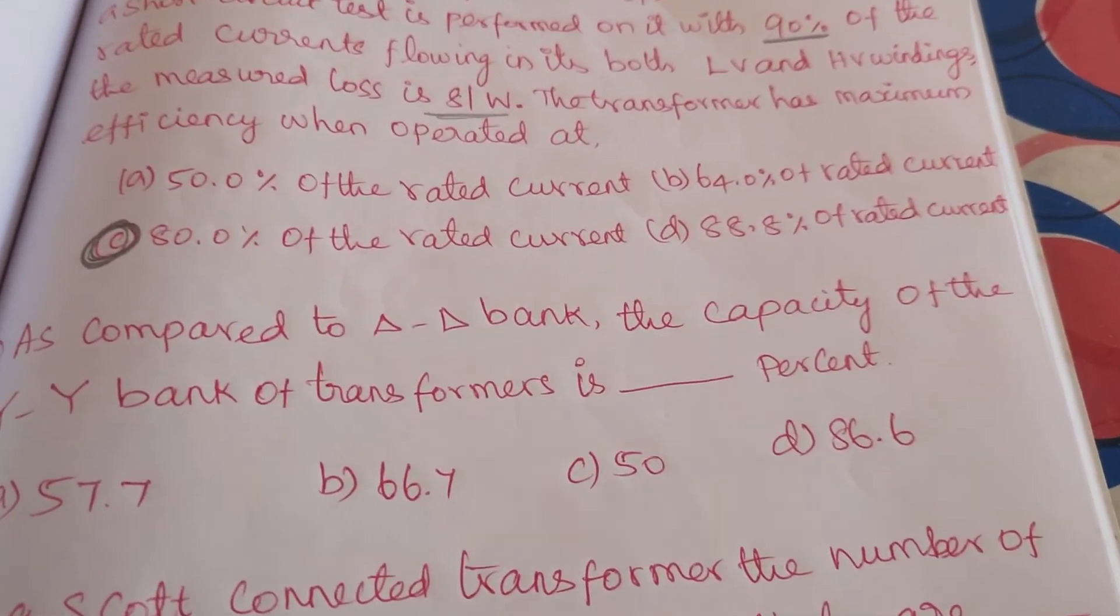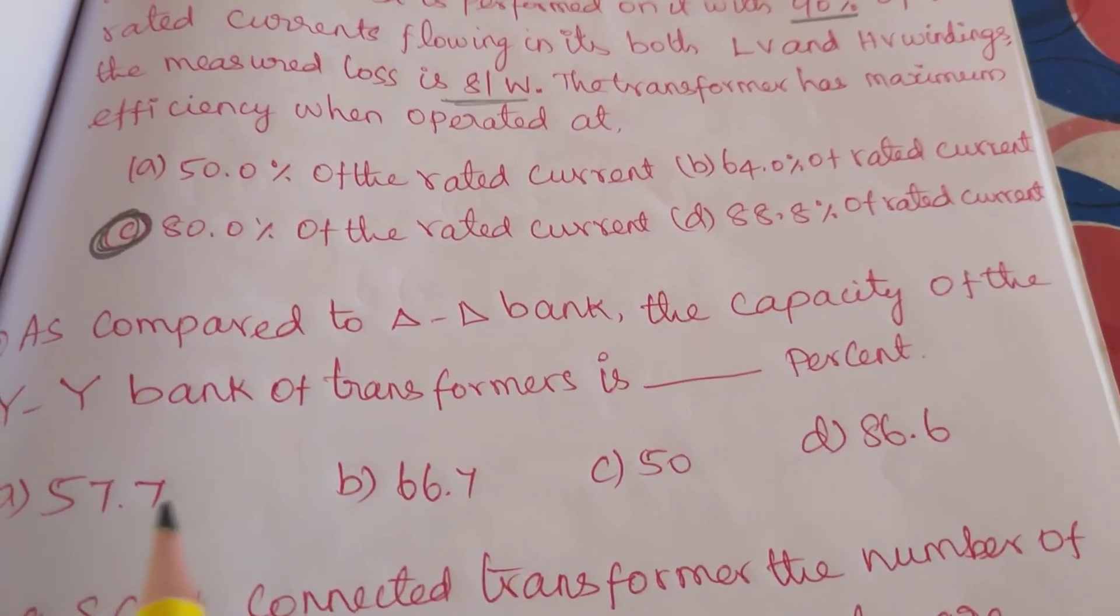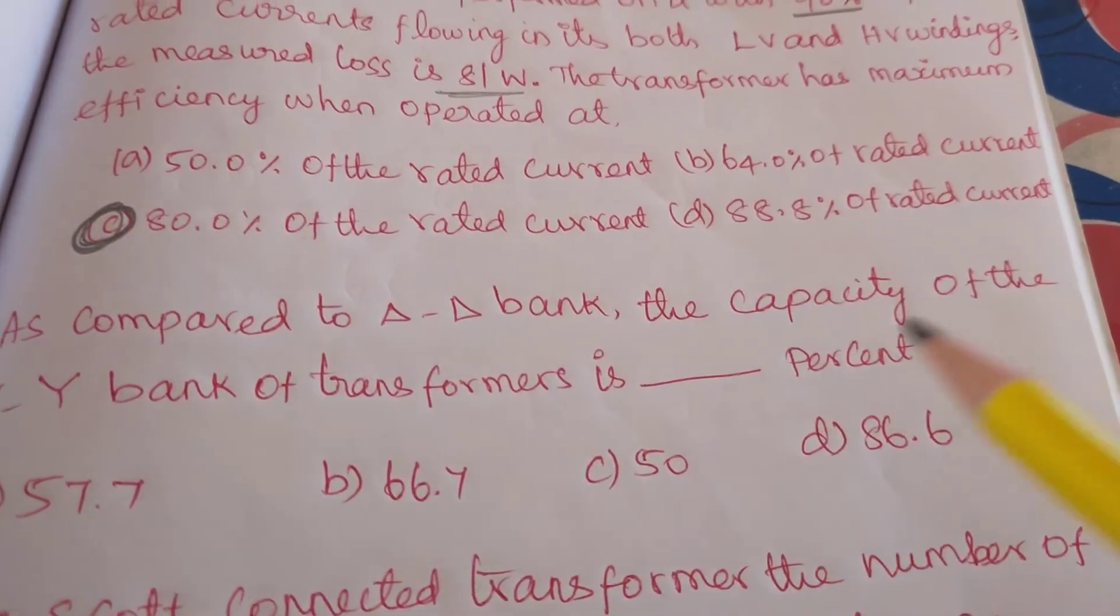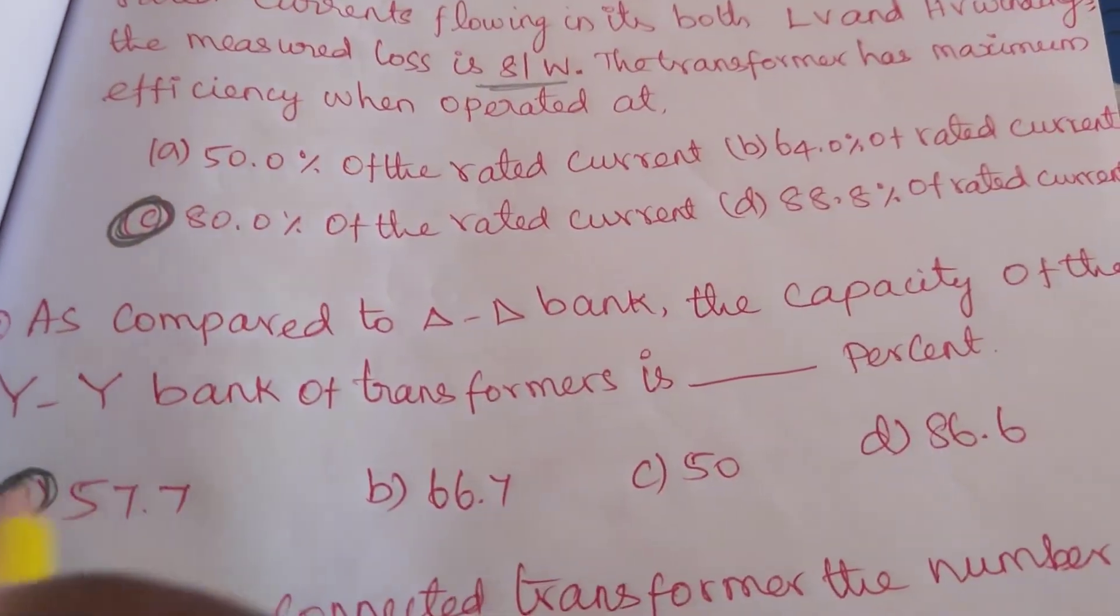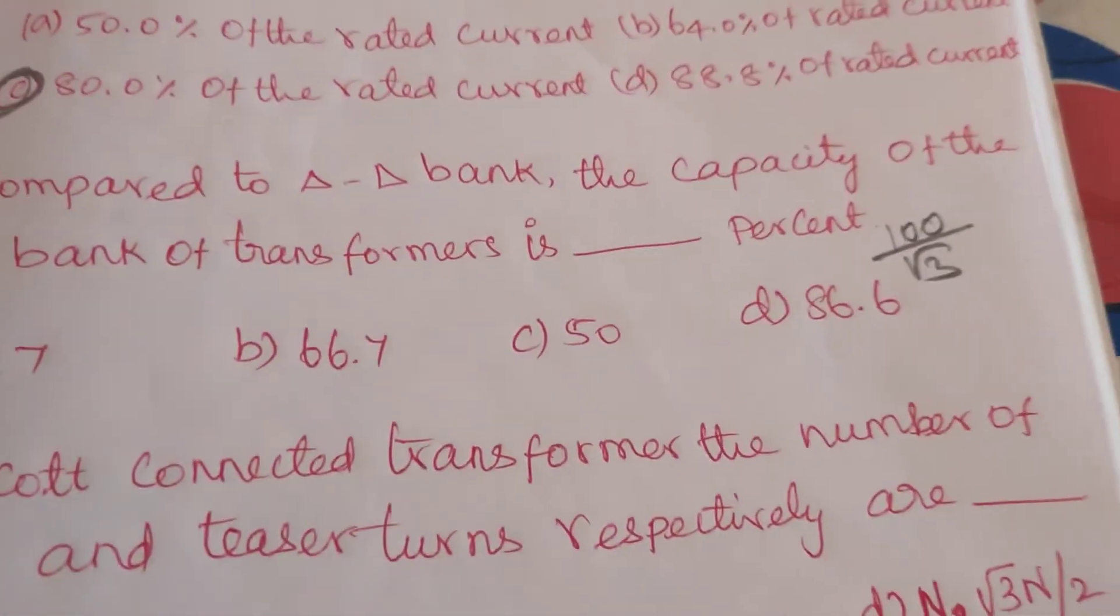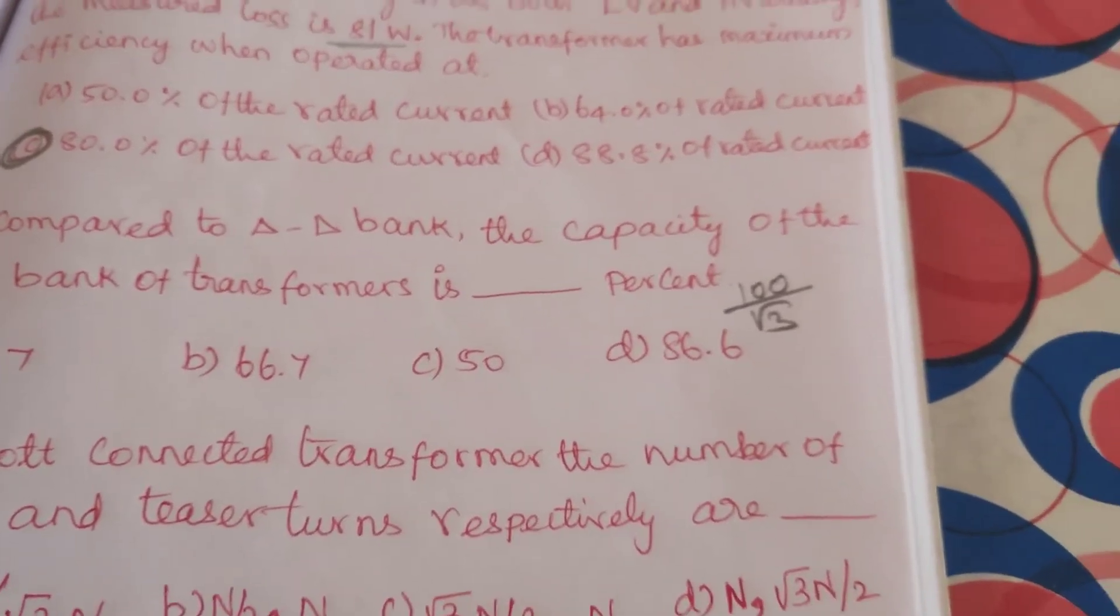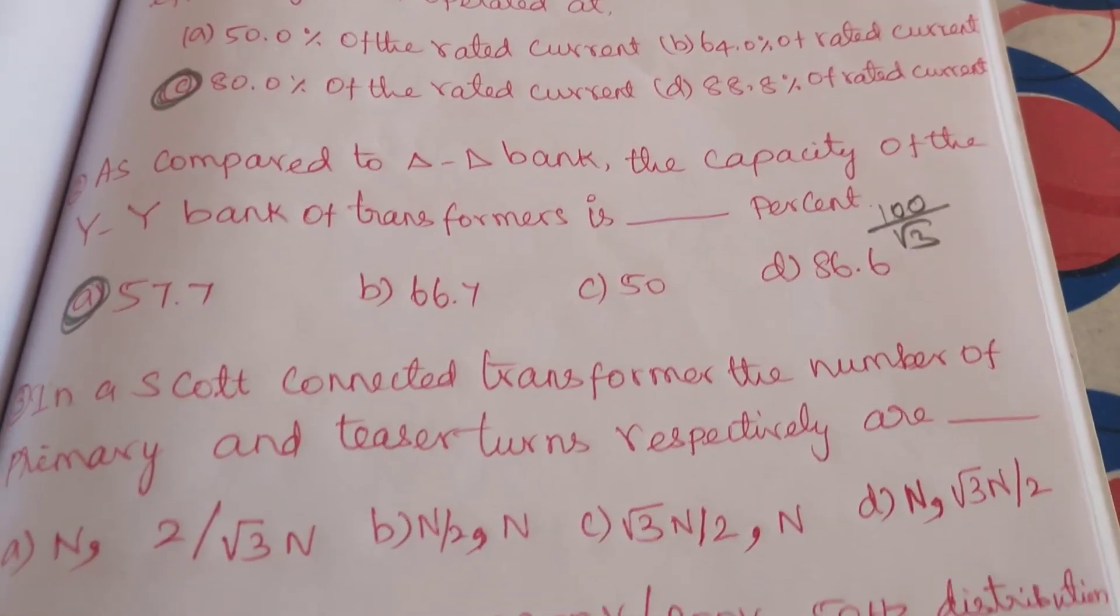Second sum: as compared to delta-delta bank, the capacity of the star-star bank of transformer is 57.7 percentage. For example, 100 by root 3, we will get 57.7. So 57.7 percentage.